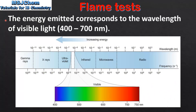The energy emitted corresponds to the wavelength of visible light, which is between 400 and 700 nm. Here we can see the electromagnetic spectrum, which shows all the frequencies or wavelengths of electromagnetic radiation. The visible spectrum corresponds to light with wavelengths of between 400 and 700 nm.